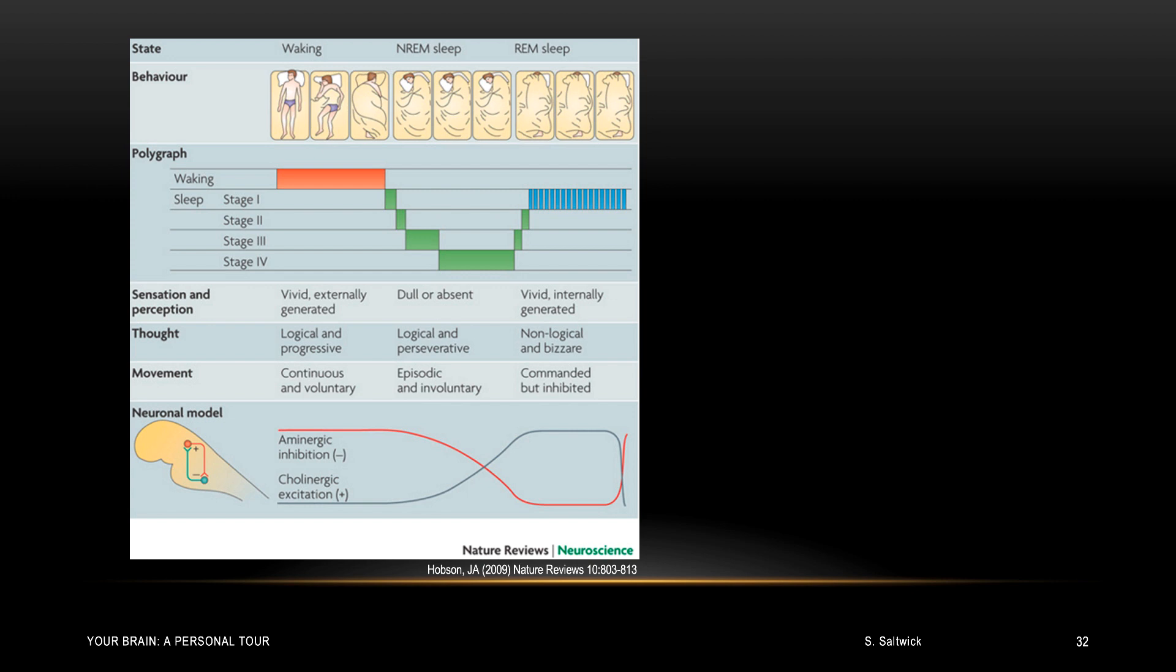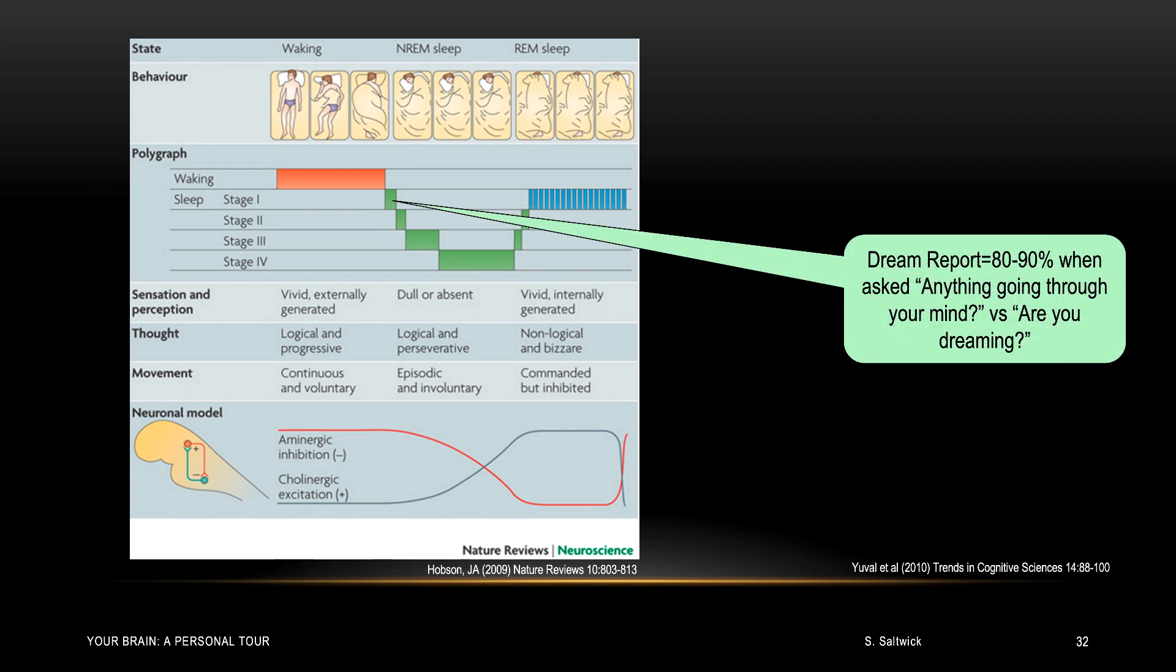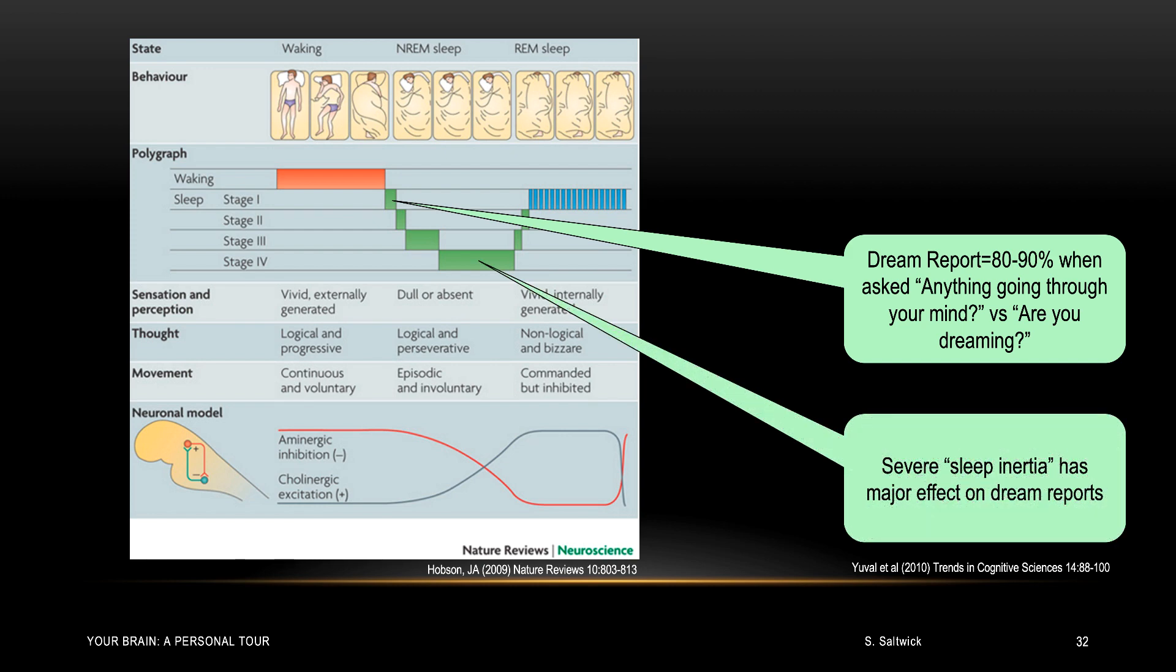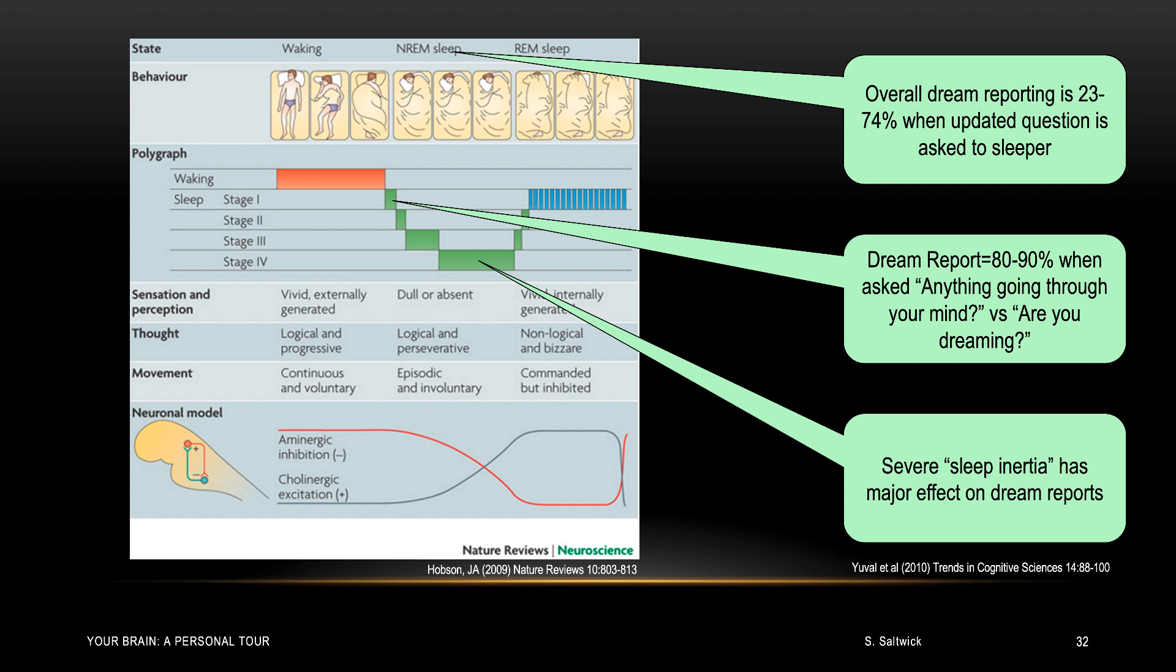Most people think that dreaming only occurs in REM sleep, and until quite recently, that was supported by the output of the research literature. But as it turns out so often with research, the results you get depends on the question you ask. If you ask people going into the first stage of non-REM sleep anything going through your mind, you will get a dream report 80 to 90 percent of the time. If you wake people up at a stage of deep sleep, there's something called sleep inertia, and it has a major effect on dream reports. People awakening from this stage of sleep need time to reorient and get back up to speed on what is happening in the now. Dream reports are very unlikely at this point in time. But if you sum over all the stages of non-REM sleep, dreaming is reported when you ask the right question between 25 and 75 percent of the time. Clearly, we dream in many stages of sleep.